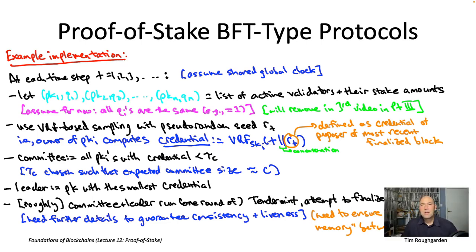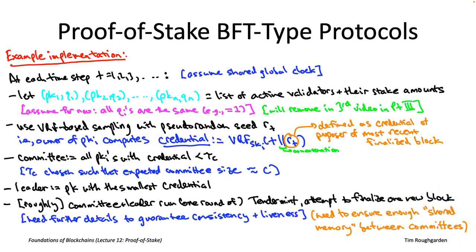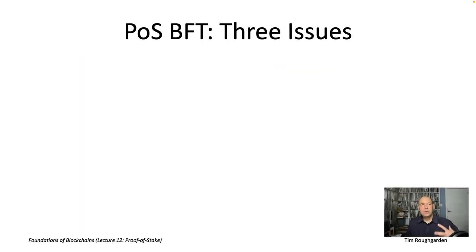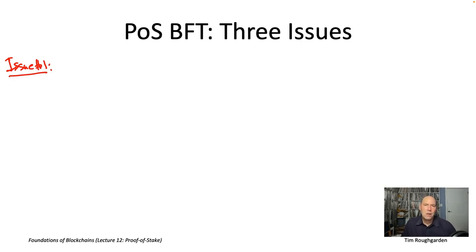At a high level, this is the protocol: at each time step, you do VRF-based sampling — that tells you who the committee members are (those with sufficiently small VRF outputs) and who the block proposer is (the one with the smallest VRF output). The nodes controlling those selected public keys are then tasked with running one round of Tendermint to finalize one new block. Now let's talk through three issues that come up when stitching VRF-based random sampling with a permissioned consensus protocol like Tendermint.